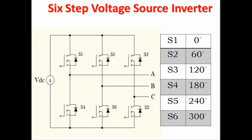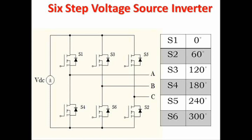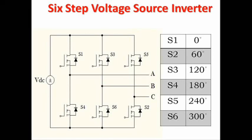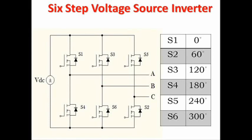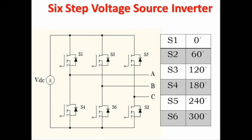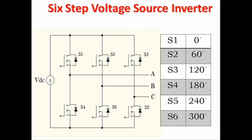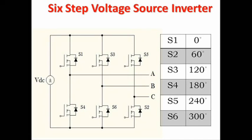The switches S1, S3, S5 are the upper MOSFETs, and S2, S4, S6 are the lower MOSFETs. The table represents the firing angles for all six switches.